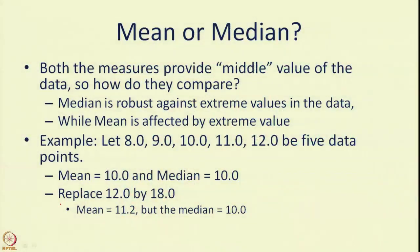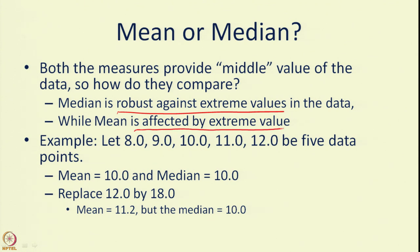A very common question is: mean or median — what should you choose? Both provide a middle value of the data. One divides the data 50-50 while the other locates the centre. The key difference is that median is robust against extreme values in the data, while the mean is affected by extreme values.